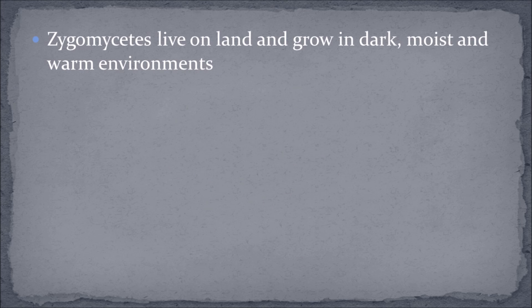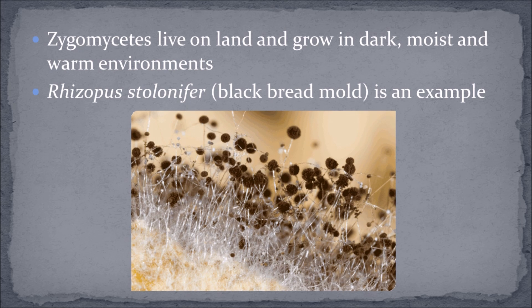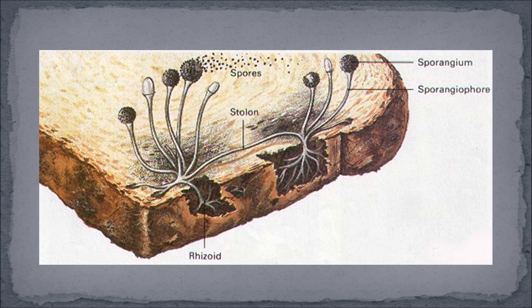Zygomycetes live on land and grow in dark, moist, and warm environments. The hyphae that grow into the bread are called rhizoids — their purpose is to hold the mold into the food and release digestive enzymes that break it down, then absorb the nutrients. Those that grow along the surface are called stolons, while the hyphae that push up into the air are called sporangiophores, wherein sporangia grow at their tips.